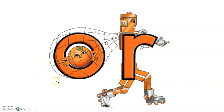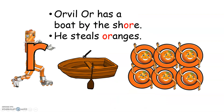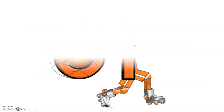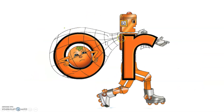So when you see these two characters, the sound is O. When you're confused about how to pronounce these two letters together, you can always memorize the boat by the shore, or that he steals oranges. Or, O.